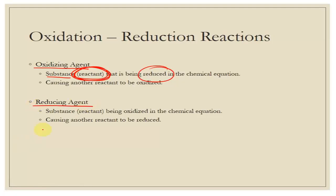The reducing agent is the reactant — again on the left — that is oxidized in the chemical reaction. It is giving up electrons. Because those electrons can't just be destroyed, they have to go to somebody. If you're being oxidized, you're forcing someone else to be reduced. So whatever reactant is being oxidized is the reducing agent.